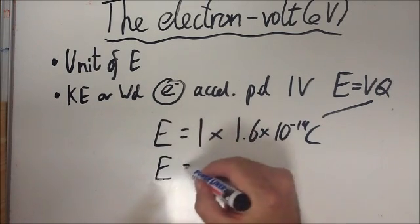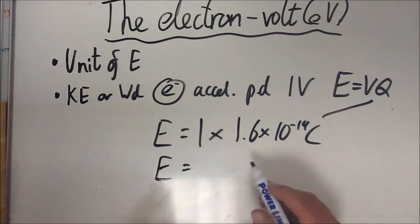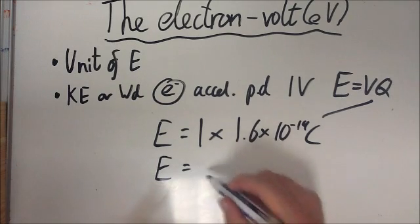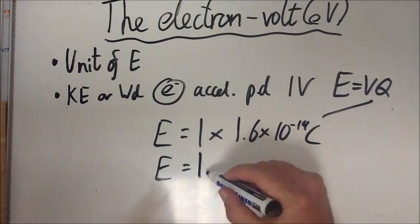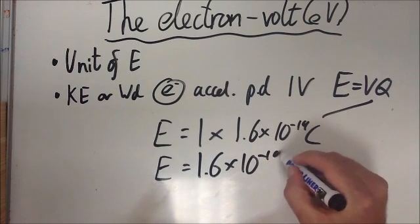So the energy in this case is the electron volt. So 1 electron volt, 1 electron accelerated through a potential difference of 1 volt. 1 electron volt equals 1.6 times 10 to the minus 19 joules.